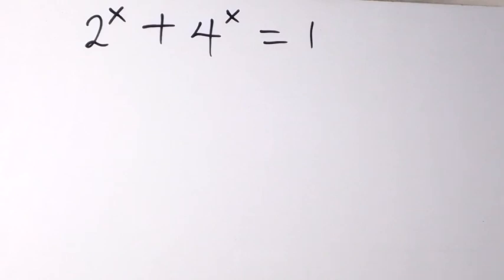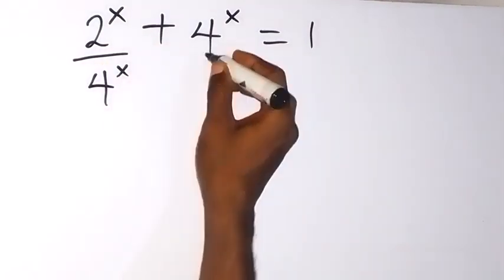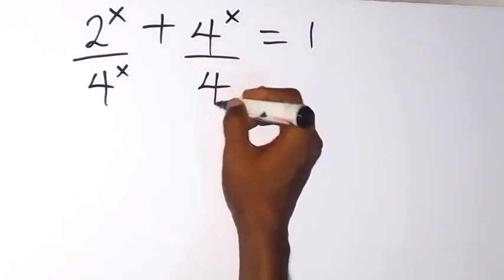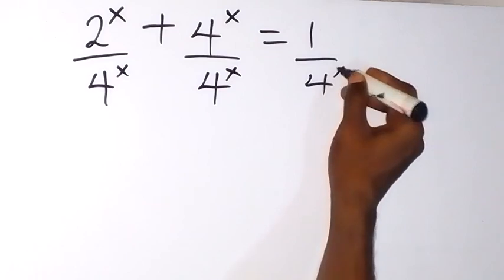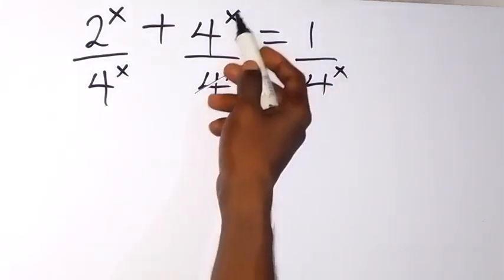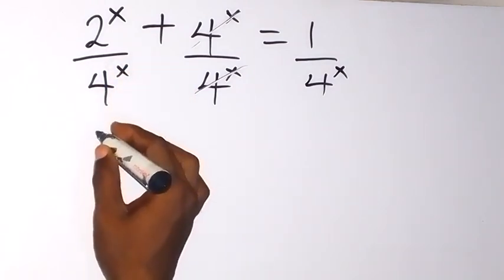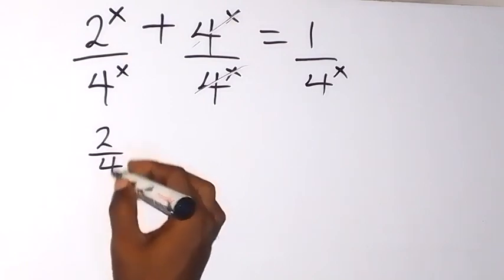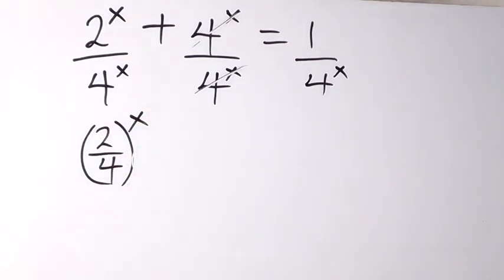Now from here, let's divide through by 4 raised to power x. This will become 2 raised to power x over 4 raised to power x, plus 4 raised to power x over 4 raised to power x, equals 1 over 4 raised to power x. Here, 4 raised to power x terms cancel each other, and we have 1 left. We can write this as 2 over 4 raised to power x, applying laws of indices.